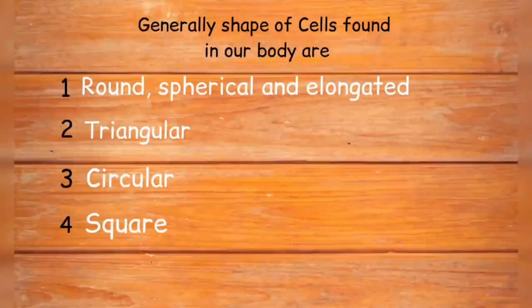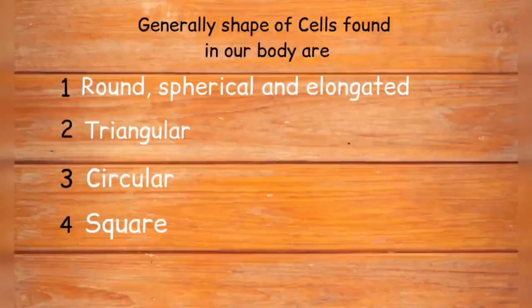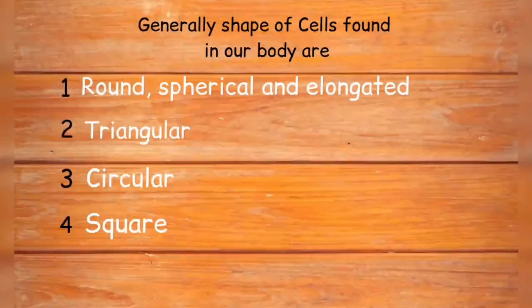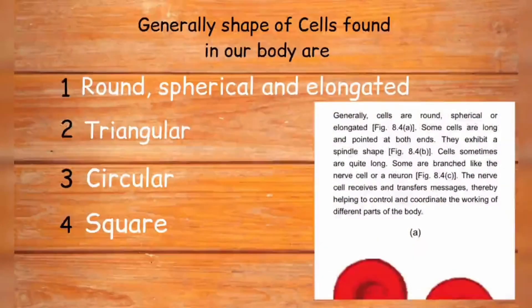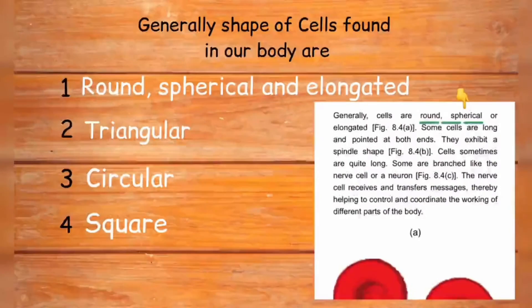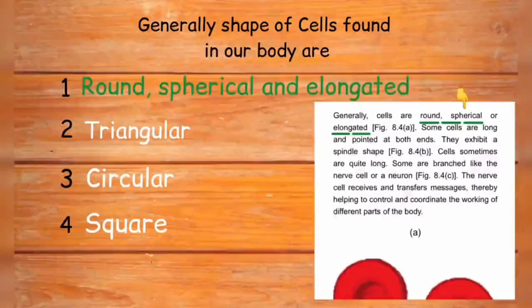Generally, the shape of cells found in our body are round, spherical, and elongated. Other options are triangular, circular, or square. It is clearly mentioned in your NCRT textbook that shape of cells are generally round, spherical, and elongated. So we go with the first option.